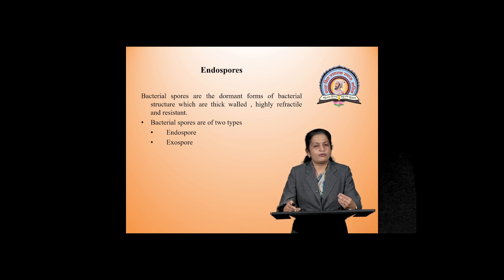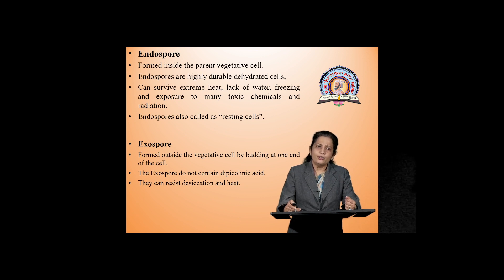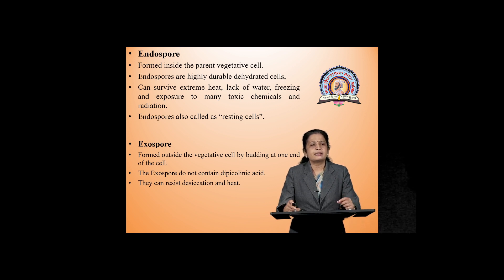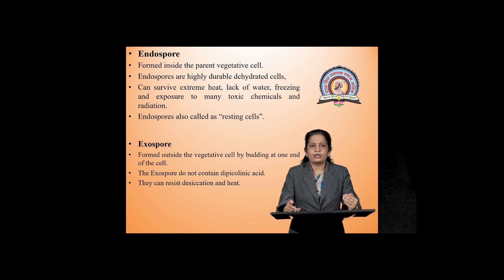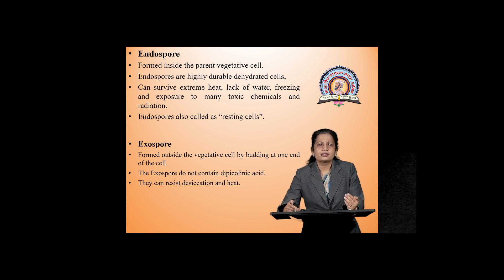Bacterial spores are of two types. One type is known as endospore and another type is known as exospore. From the name itself it is clear: endospore means these spores are formed inside the parent vegetative cell — their formation takes place inside the vegetative cells. These endospores are highly durable; they can live for a very long period. Even at room temperature, endospores can survive for many days and even some spores can survive for years.